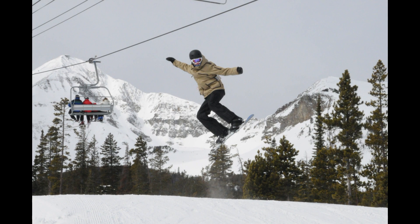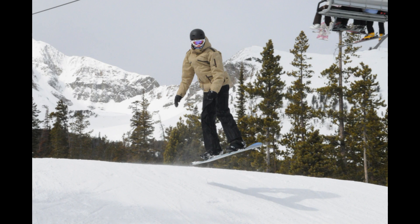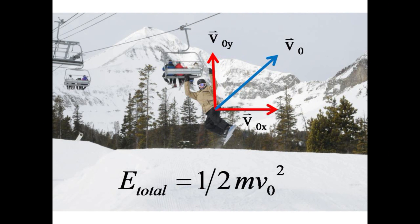Consider the trajectory of this snowboarder. Initially, he has only kinetic energy, one-half mv0 squared. Note that this initial velocity, v0, results from the vector sum of the horizontal and vertical components of velocity, v0x and v0y.